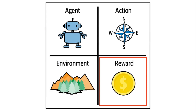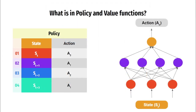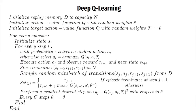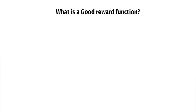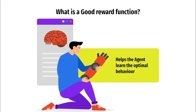Up till now, we have not been focusing on the most important component of reinforcement learning: the reward function. We started in detail about what the policy and value functions are made up of and what learning algorithms we should use. Now it's time to focus on the most important component, because of which our agent might or might not learn to solve a task no matter how good the learning algorithm you use. It is very important to design a good reward function for your agent to learn the optimal behavior. A good reward function is anything that helps the agent learn to solve a particular task optimally.